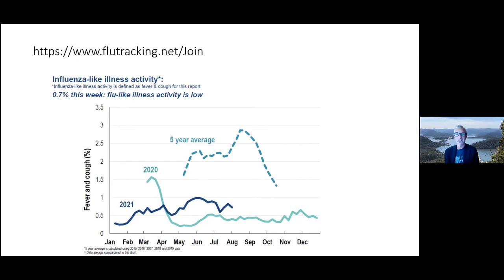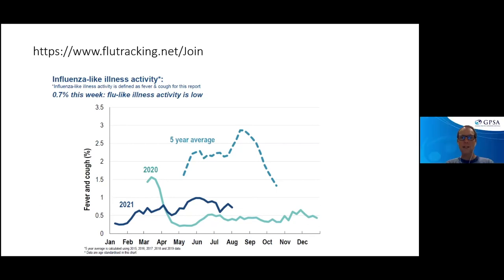Oseltamivir is not on the PBS — patients pay approximately $40 for a course. FluTracking is a fantastic ongoing crowdsourced public science study led by the Population Health Group from Newcastle, now with over 150,000 participants across Australia and internationally. Participants complete a weekly 30-second survey asking about cough and fever. Data shows a normal winter peak in August-September of around 3% of participants, which essentially disappeared in 2020 and was suppressed again in 2021 with renewed social distancing measures.